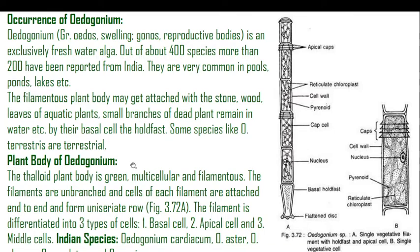The plant body of Oedogonium is thaloid, always green in color, and multicellular — meaning many cells are continuously attached to each other forming filaments. The plant body is therefore filamentous and unbranched. The cells of each filament are attached end to end and form a uniseriate row. The filament is differentiated into three types of cells: first, the basal cell (also called the holdfast), then the apical cell at the topmost position, and in between both of them, the middle cells.